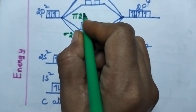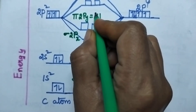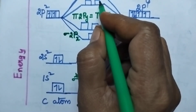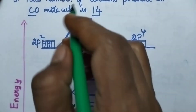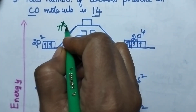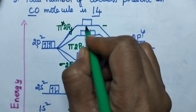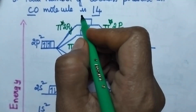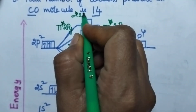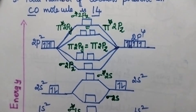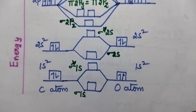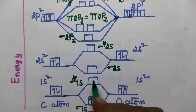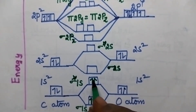They can be represented as pi 2py having equal energy as pi 2pz. The above orbitals are antibonding molecular orbitals, named as pi star 2pz, and sigma star 2px always has the highest energy. Coming to the filling of molecular orbitals, 4 electrons are present, so the bonding and antibonding molecular orbitals for 1s will be filled.